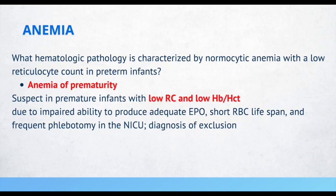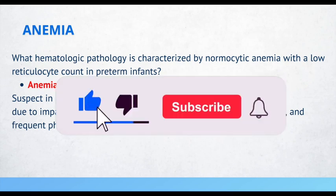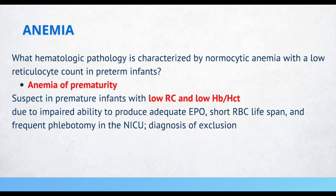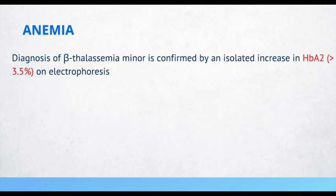What hematologic pathology is characterized by normocytic anemia with a low reticulocyte count in preterm infants? Anemia of prematurity. We need to suspect this in premature infants with a low reticulocyte count and low hemoglobin. Anemia can be seen in premature newborns due to impaired ability to produce adequate EPO, a shorter red blood cell lifespan, and frequent phlebotomy in the NICU. Another way to confirm thalassemia minor is an isolated increase in HbA2 greater than 3.5%.